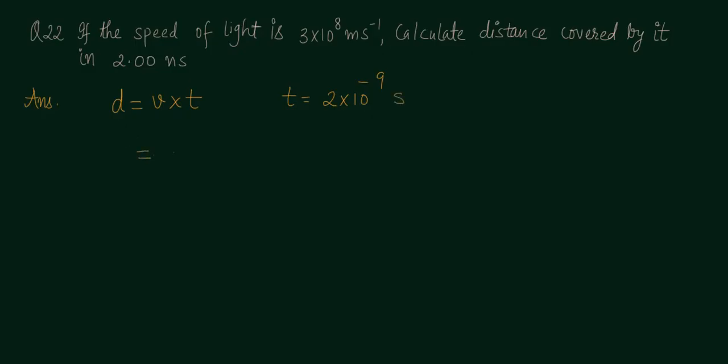For distance, the speed or velocity is 3×10^8, and we multiply by 2×10^-9. This turns out to be